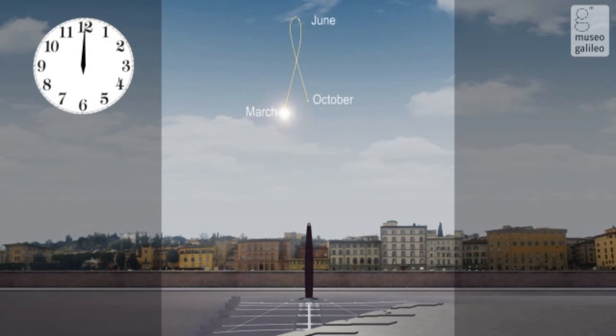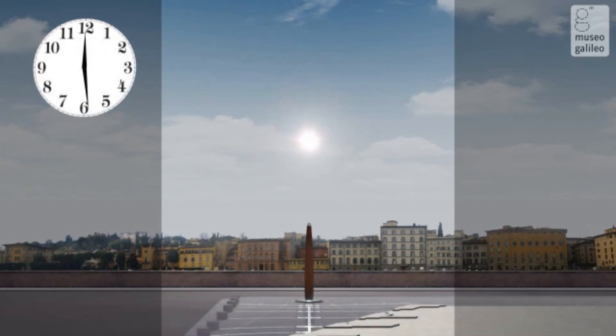During daylight saving time in spring and summer, the difference between true and mean time must consider the setting of clocks one hour forward. For example, in February, the sundial would indicate true midday around 12:28 p.m., while in July, during daylight saving time, around 1:20 p.m.